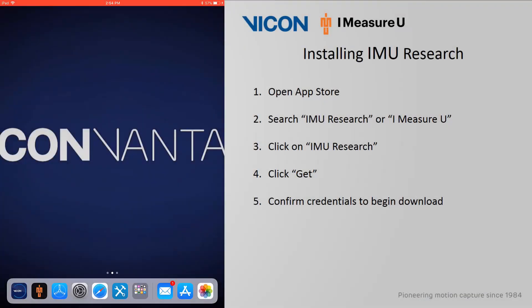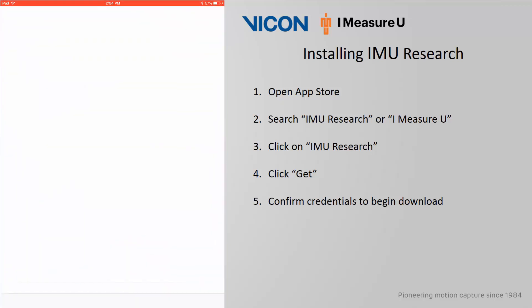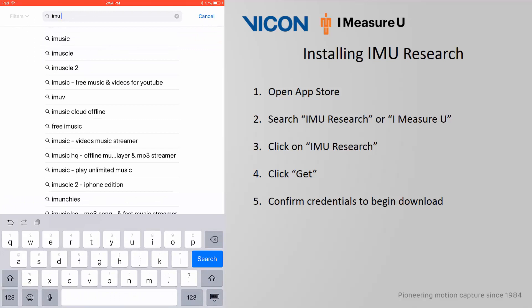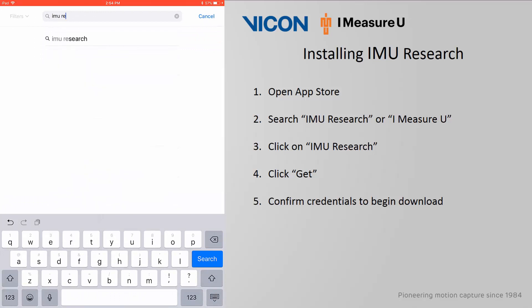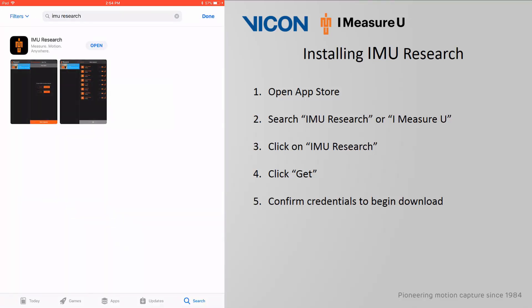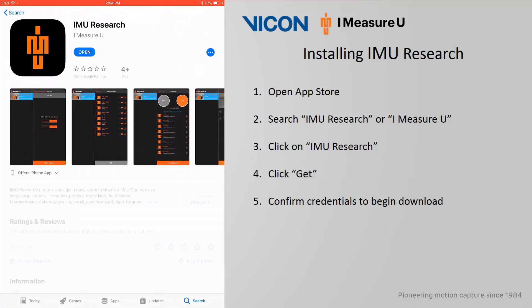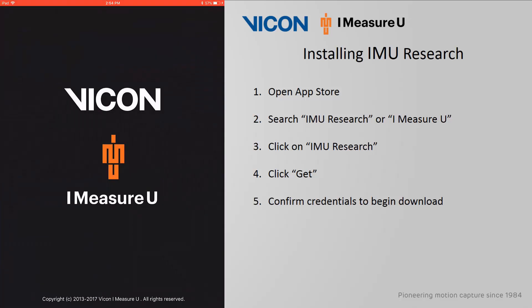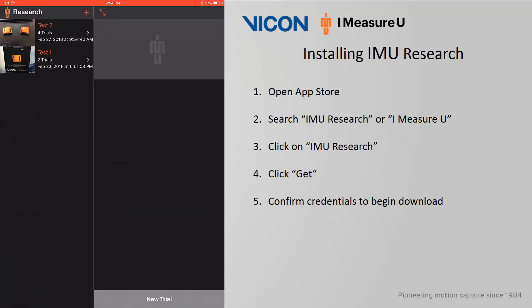To download and install the IMU Research app, click on the App Store and search for IMU Research or iMeasureU. Click on IMU Research and then click Get, where this interface currently says Open. After confirming your credentials and downloading, click on Open, which I will do here.